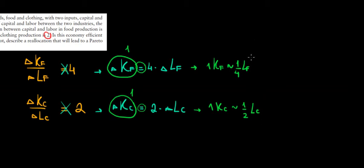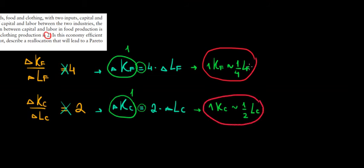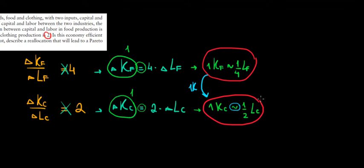This difference in valuation creates a possibility for trade. Because the food company values labor more than the clothing company does, it would be beneficial for the clothing company to give some of its labor to the food company in exchange for capital. Let's see how that works: the food company gives one unit of capital to the clothing company, and the clothing company gives back 1/2 unit of labor — which is what that unit of capital is worth to it.